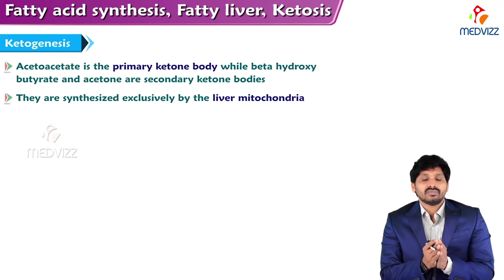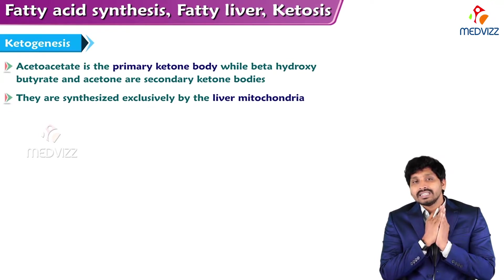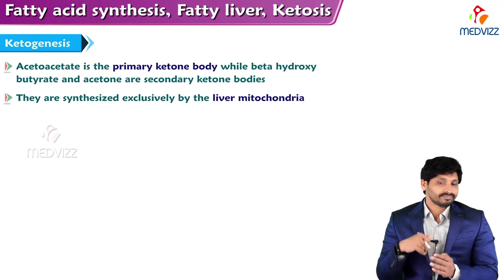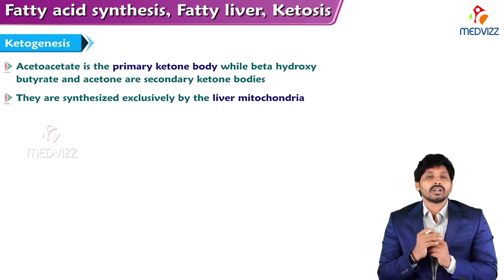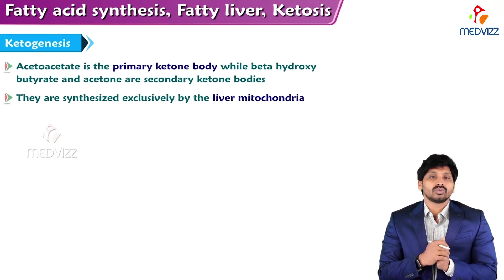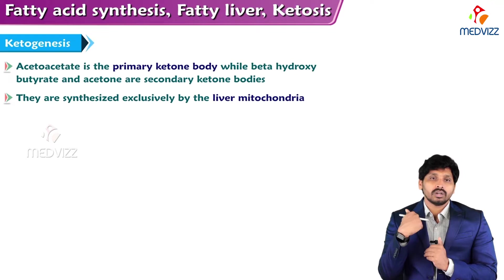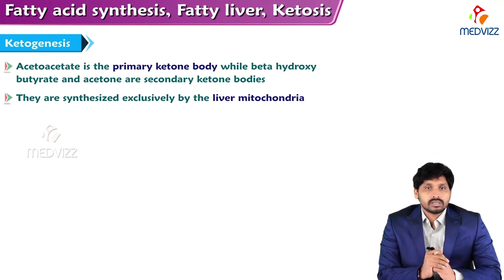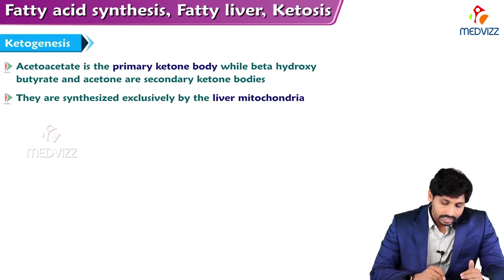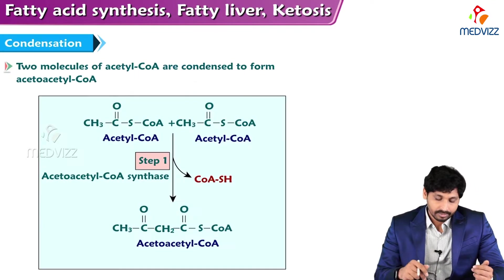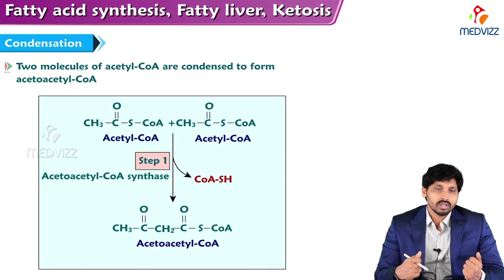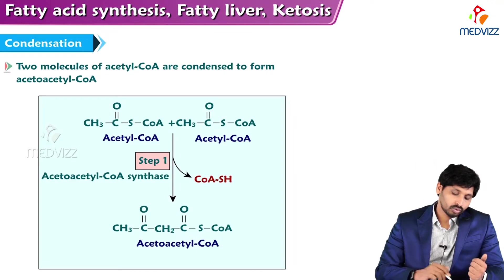For metabolic purposes, acetoacetate and beta-hydroxybutyrate can be utilized for energy production, but there is less significance towards acetone as it can escape from the body through respiration — through the air evacuated from the lungs. Ketone bodies are synthesized in liver mitochondria.